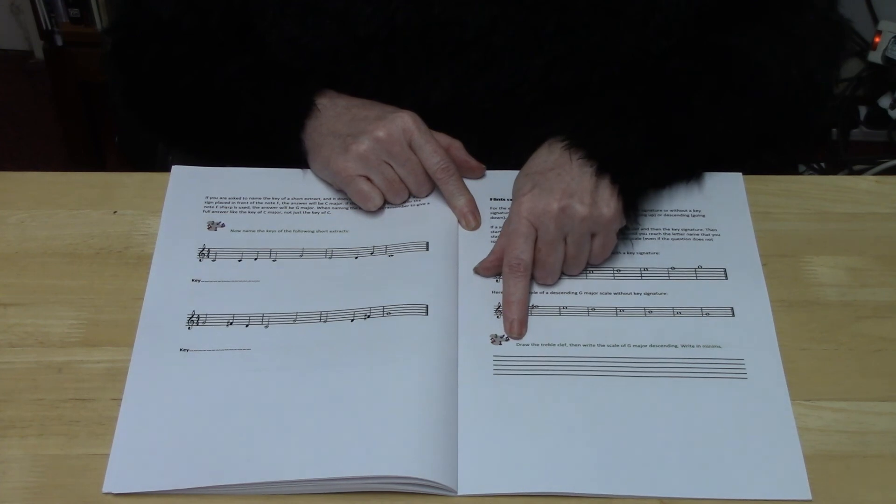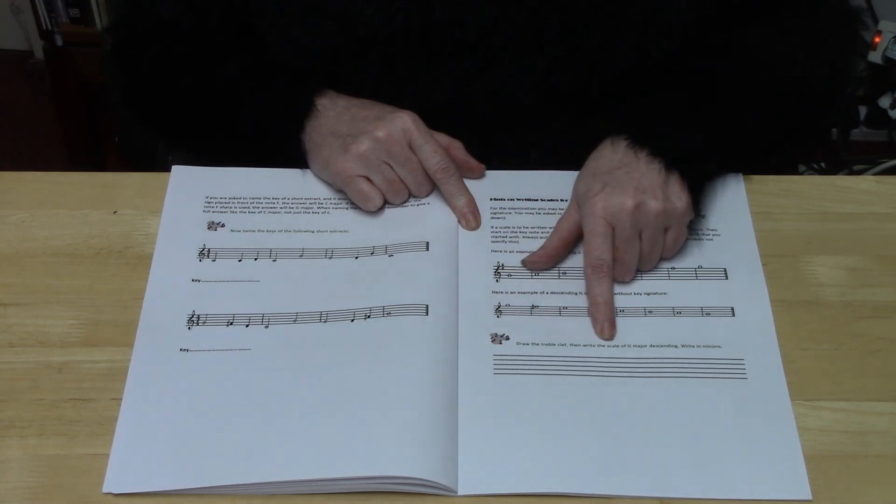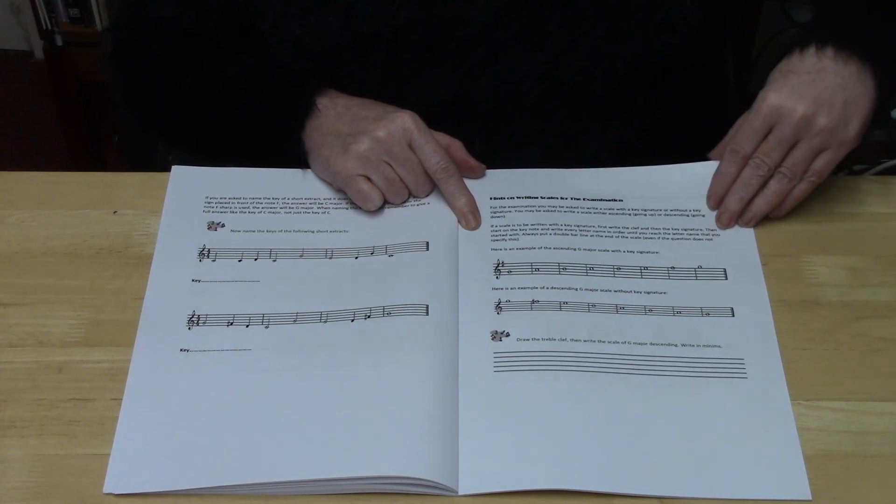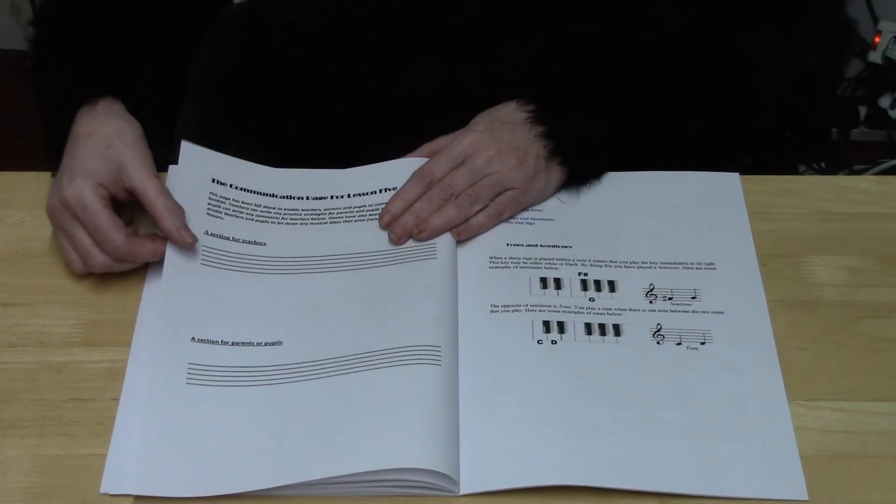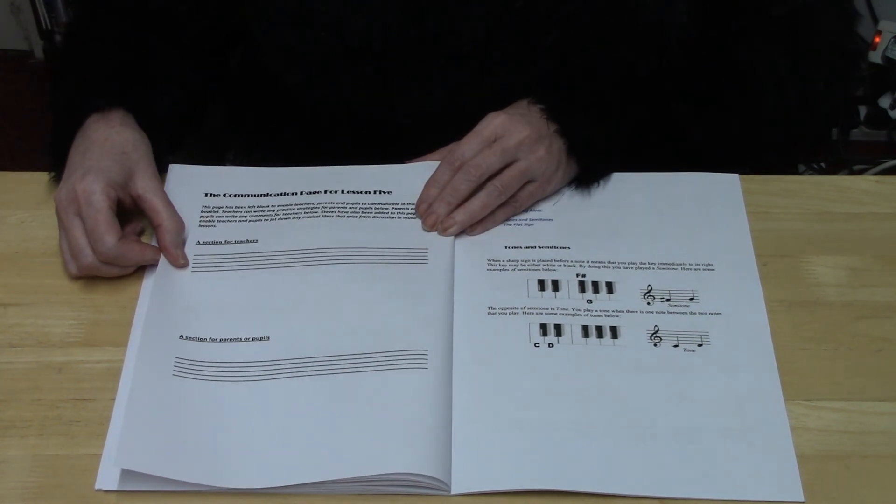And then it says draw the treble clef then write the scale of G major descending and write in minims. And that completes Lesson 5.